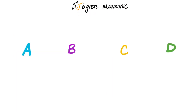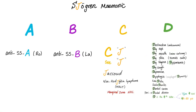There's another mnemonic for Sjogren's syndrome: A, B, C, D. A is Anti-SSA or anti-Ro. B is Anti-SSB or anti-La. C stands for CJ — Jaccoud's deformity and Non-Hodgkin's lymphoma, which is a B-cell lymphoma, marginal zone lymphoma, MALT lymphoma. D is Destruction — dry eyes, dry mouth, dry skin, dry cough, depression — you know the rest.